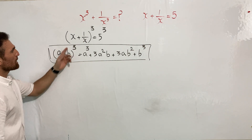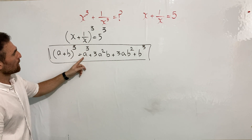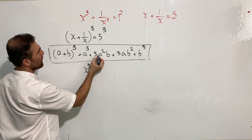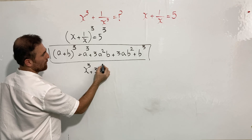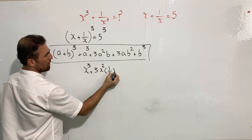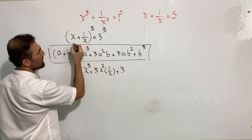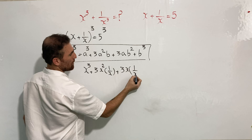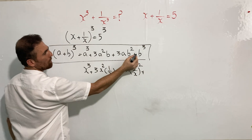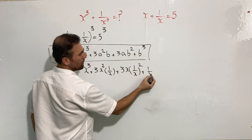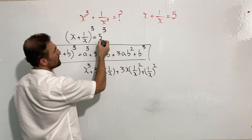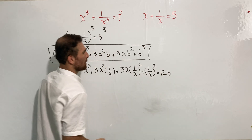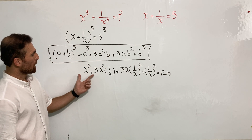So, x plus one over x, cubed equals: first term cubed, plus three times the first term squared times the second term, plus three times the first term times the second term squared, plus the second term cubed. And the right side, five cubed, equals 125.